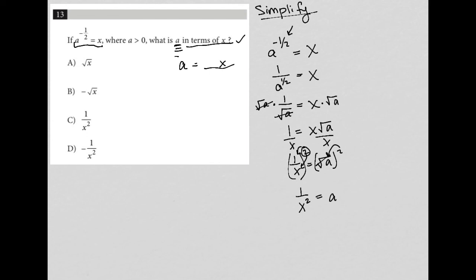There's my answer. A is equal to one over x squared, which is choice C.